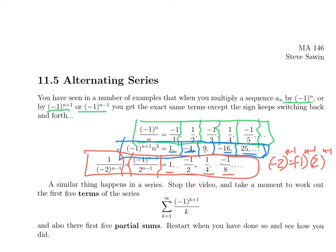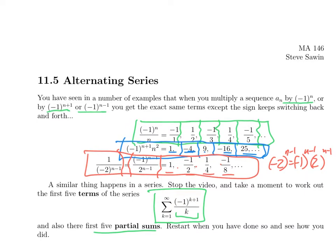Similar thing happens when it shows up inside a series. I want to do an example and I think we are now at a point where a lot of these basic calculational things are hopefully getting in your fingers. But I really want to catch if they haven't. So I want to ask you to look at this series: sum from k=1 to infinity of (-1)^(k+1)/k. Write out the first five terms and then write out the first five partial sums. Stop the video, do that, and when you're done come back.